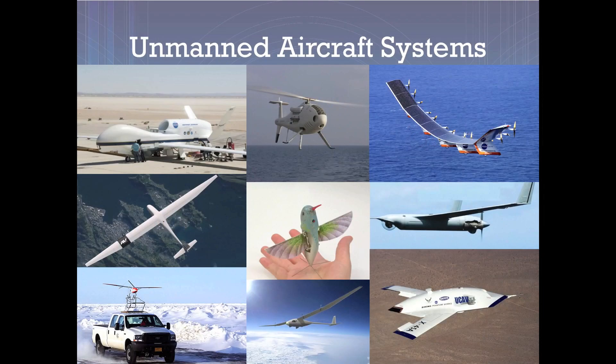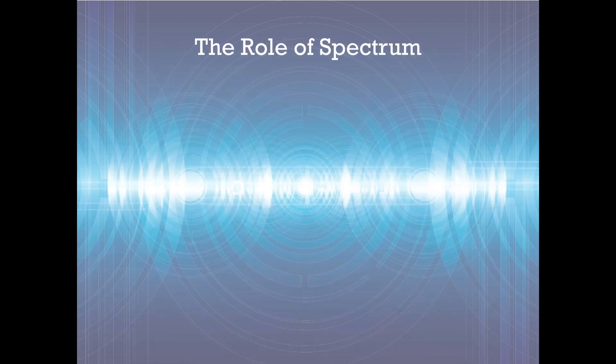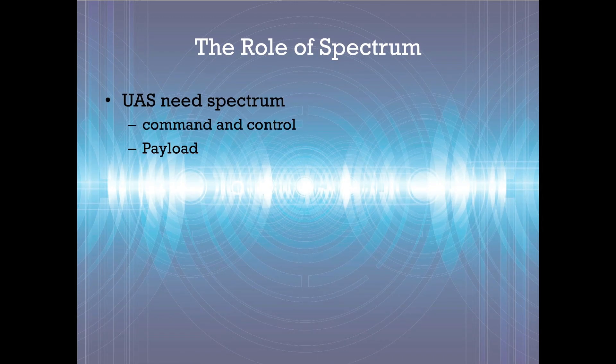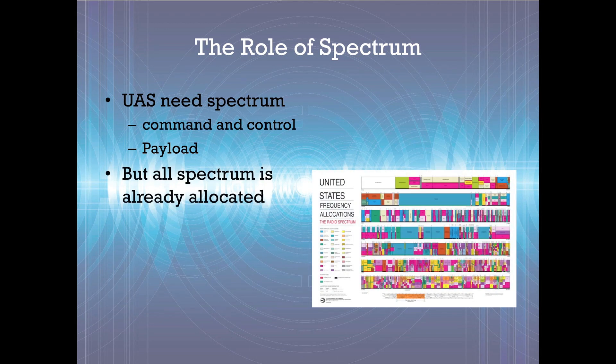Unmanned aircraft systems are widely used by the military, but they have significant civilian uses such as science, public safety, business, and education. Unmanned aircraft systems need radio spectrum for remote command and control of the vehicle, as well as to support the payload. No spectrum is readily available, as all spectrum is already allocated for other uses.